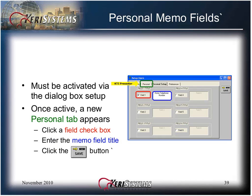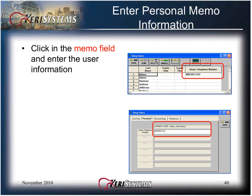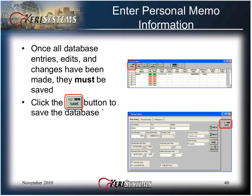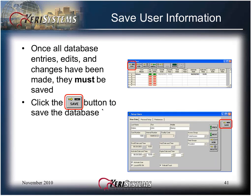Once active, a new personal tab appears. Click a field checkbox, enter the memo field title, and click the Save button. Click the Save button to save the database changes, then click in the memo field and enter the specific user information. Once all database entries, edits, and changes have been made, they must be saved. Click the Save button to save the database changes. If the database is not saved and the user window is closed, all new information is lost and must be re-entered.